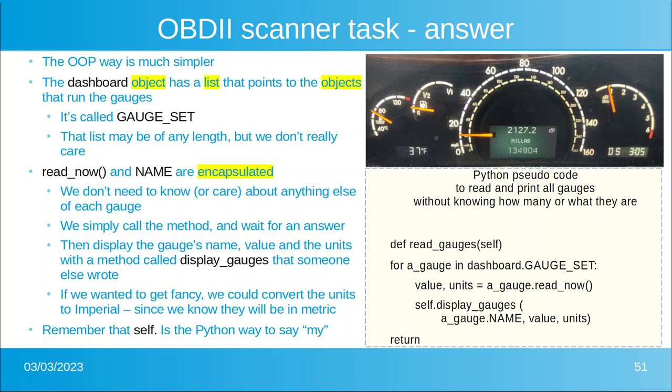The next line is value and units — that's a tuple. One is a number, one is going to be a string. Equals gauge dot read now. So we send that command, wait for the gauge to tell us, and then use the display gauges procedure. We know that procedure requires a string name, the numeric value, and the string unit. And that's it.